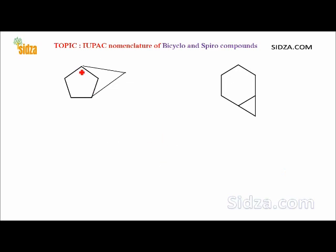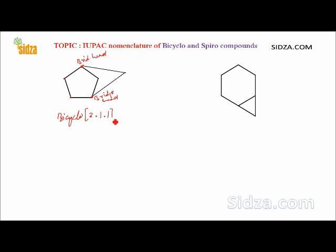In this molecule, the two bridgeheads are joined by three bridges. One bridge contains two carbon atoms, one contains one carbon, and one also contains one carbon — so two, one, one. The total number of carbon atoms in the molecule are six, so it is hexane: bicyclo[2.1.1]hexane.